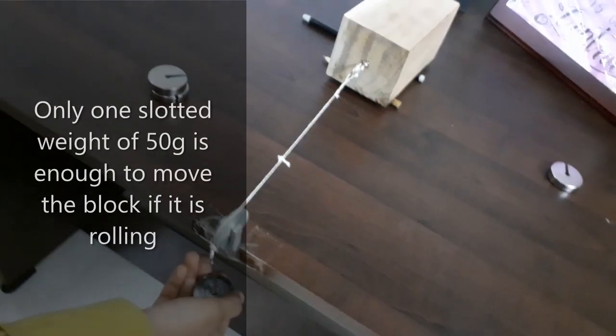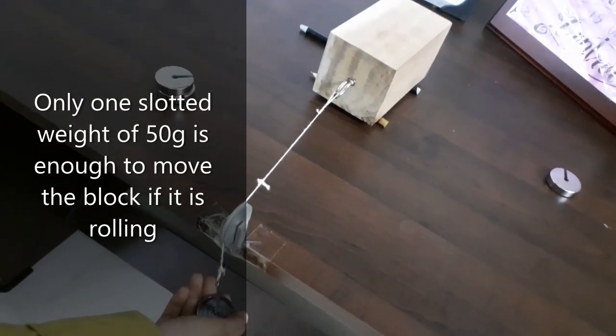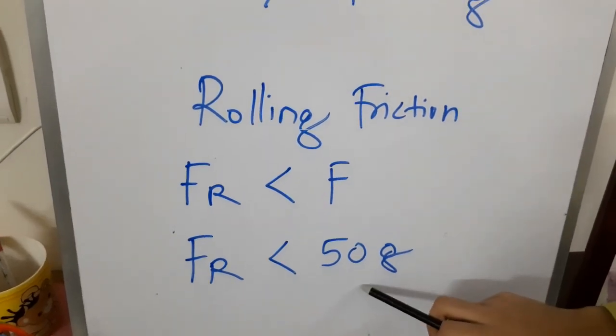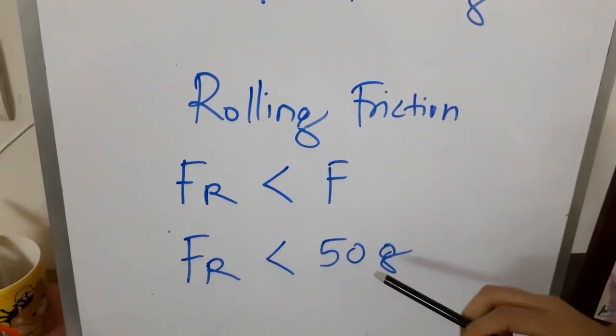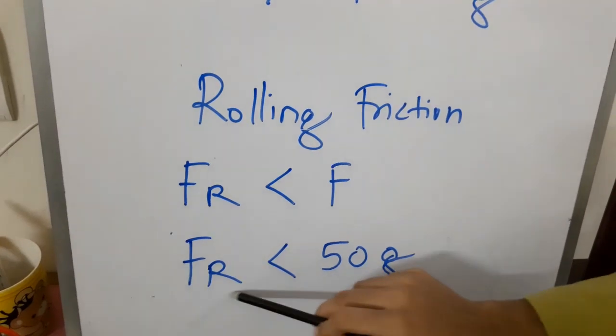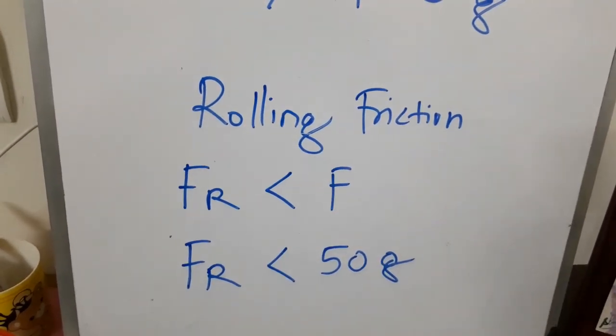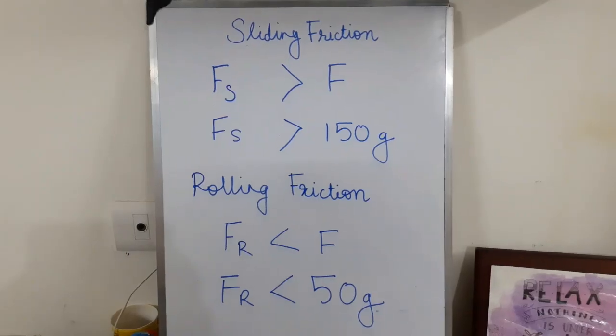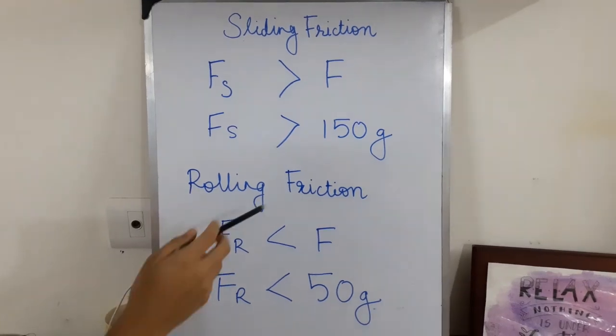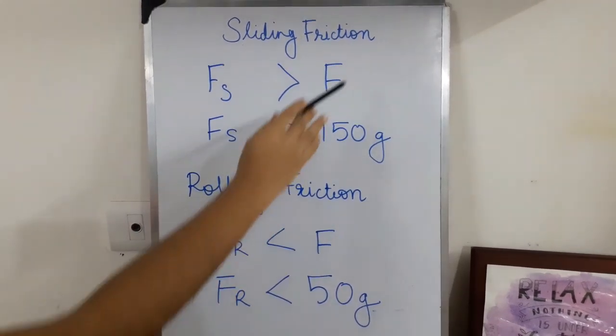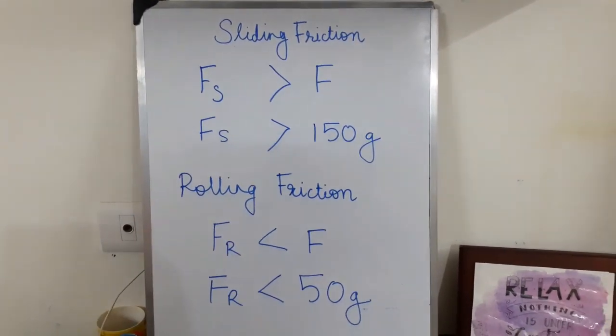Let us do it one more time. For the first reading itself, the block started to move, which means that the rolling friction is less than 50 grams. In this experiment, we understand that rolling friction is less than sliding friction. Thank you for watching this video. I hope you liked it.